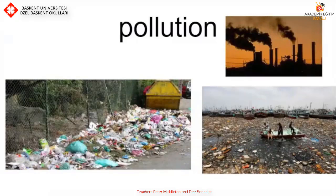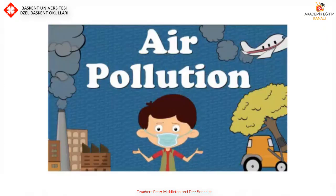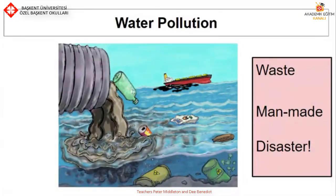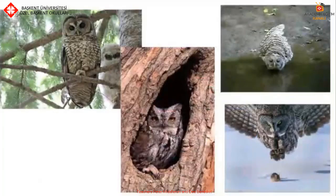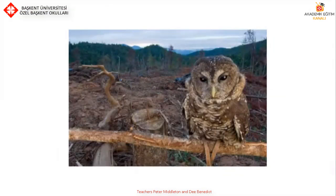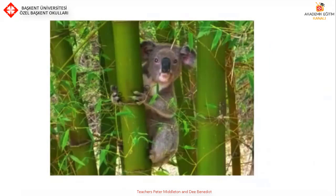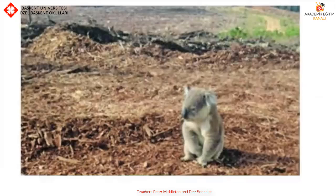Let's talk about things that affect the environment. This is pollution. Here is logging, air pollution and water pollution. In the water there's lots of waste. These are all man-made disasters. You can see an owl in this picture. What habitat is it in? Is it happy or sad? Now look at this owl — is it happy or sad? What's happened to its habitat? This is a koala. Where does it live? What's its habitat, and what's happened to its habitat here?